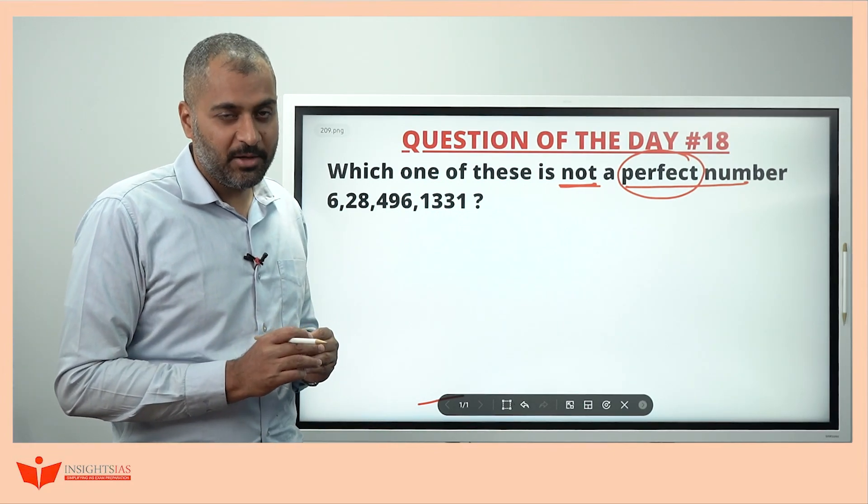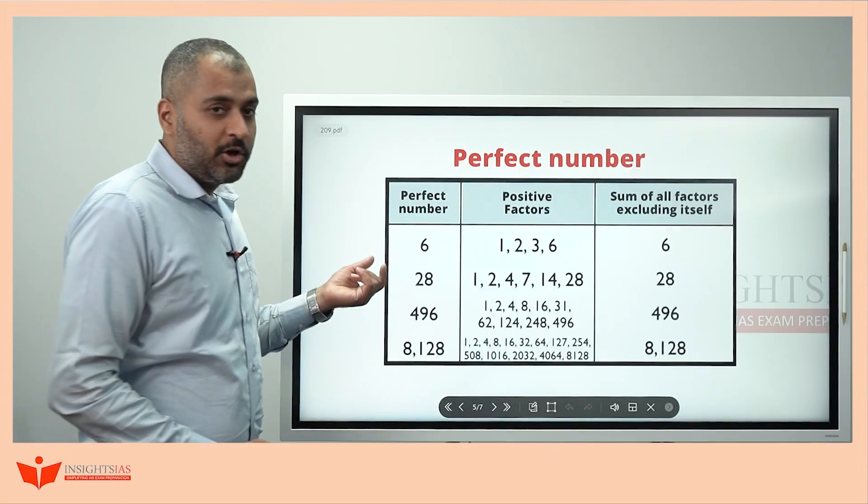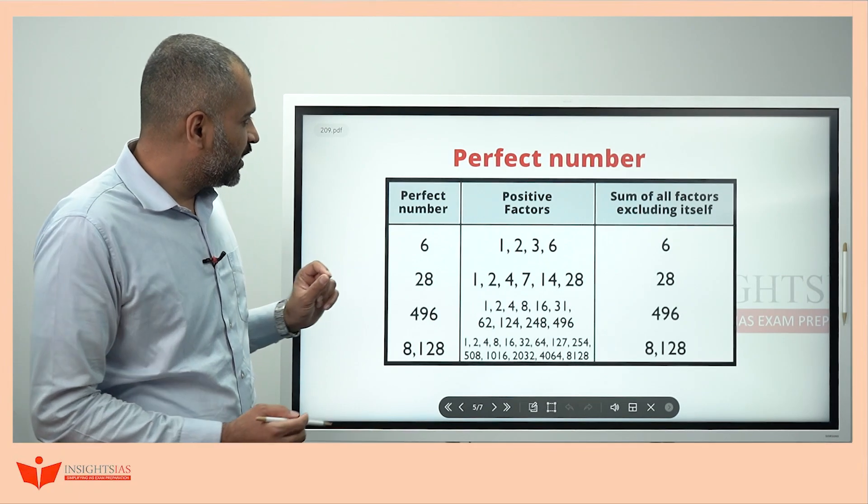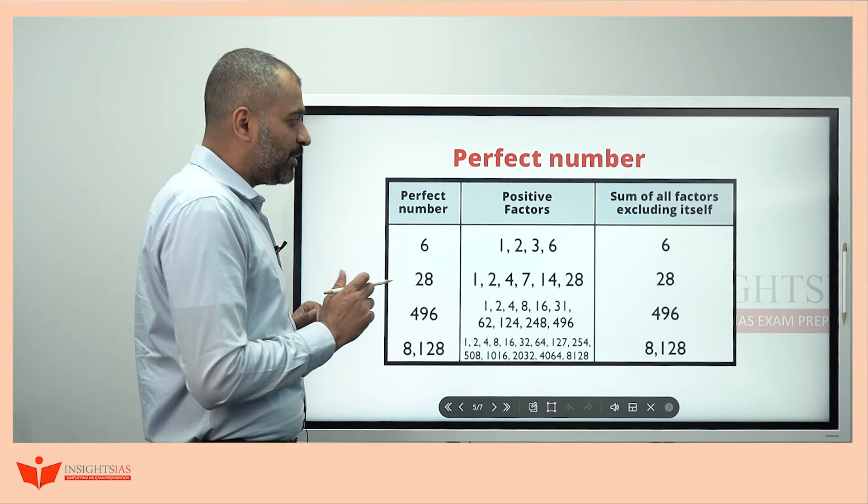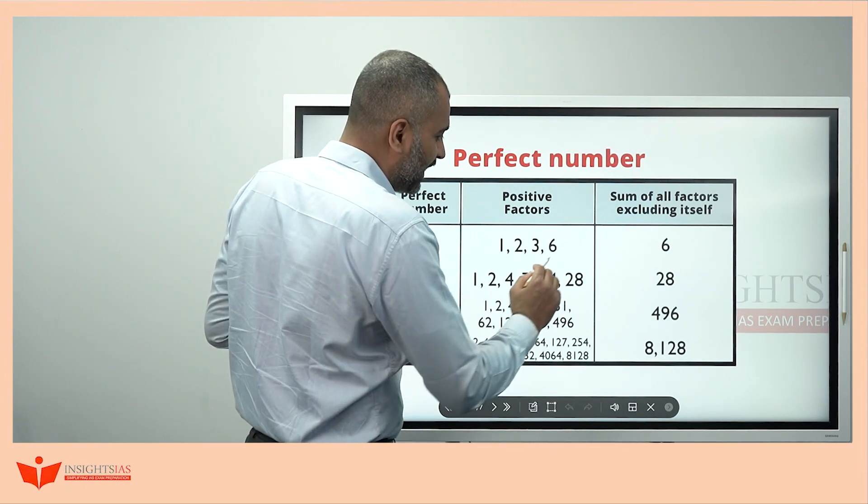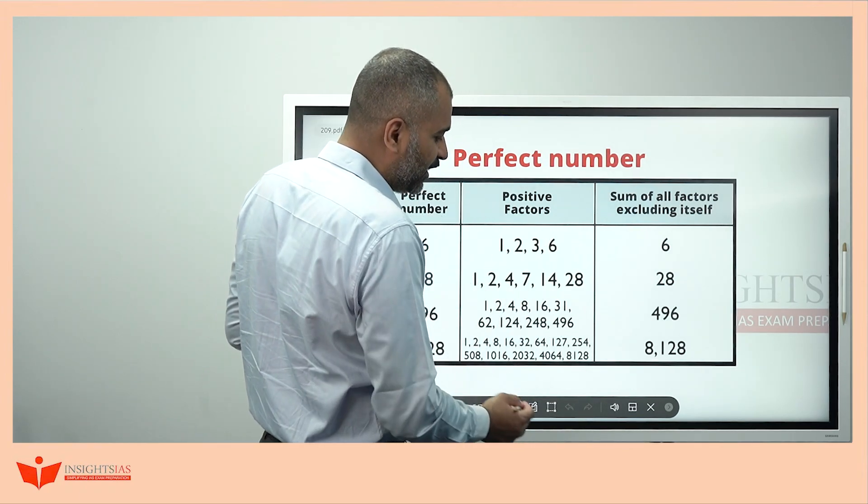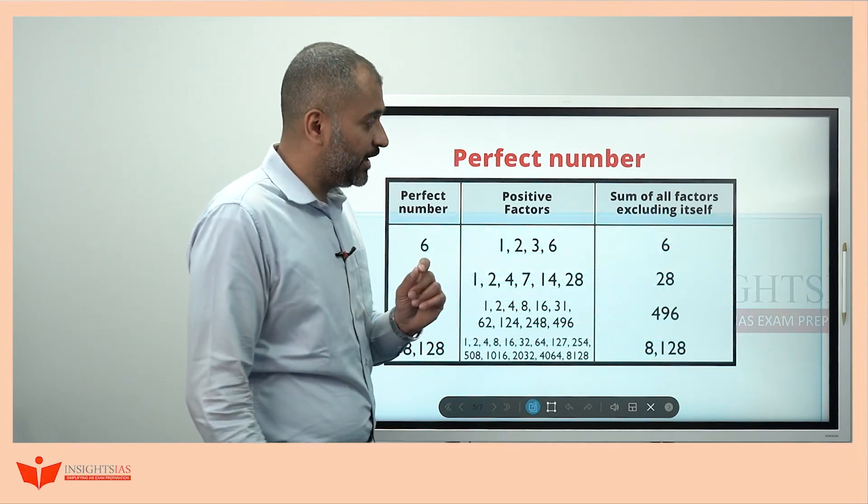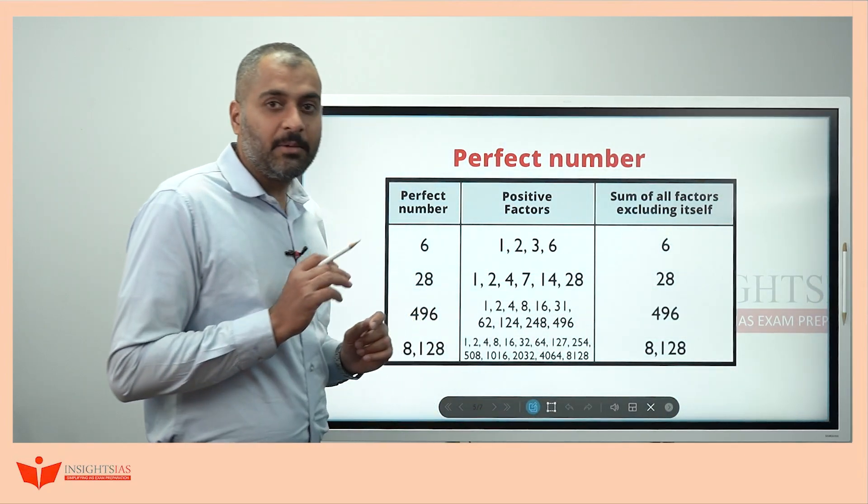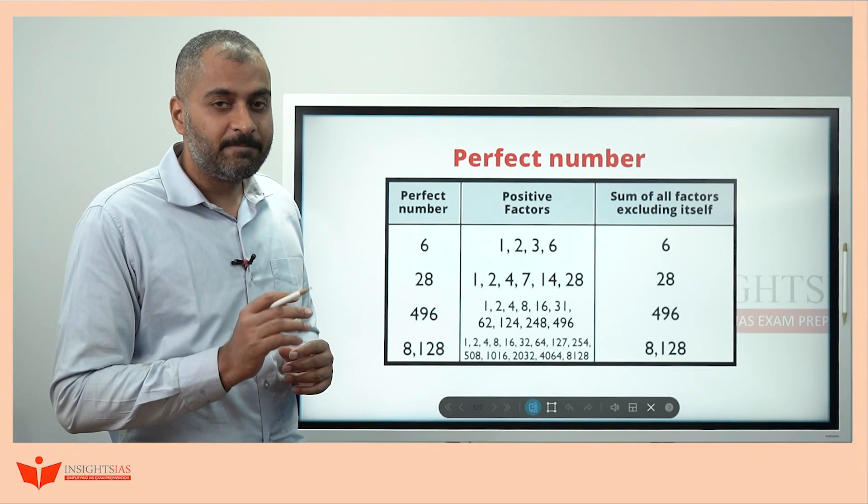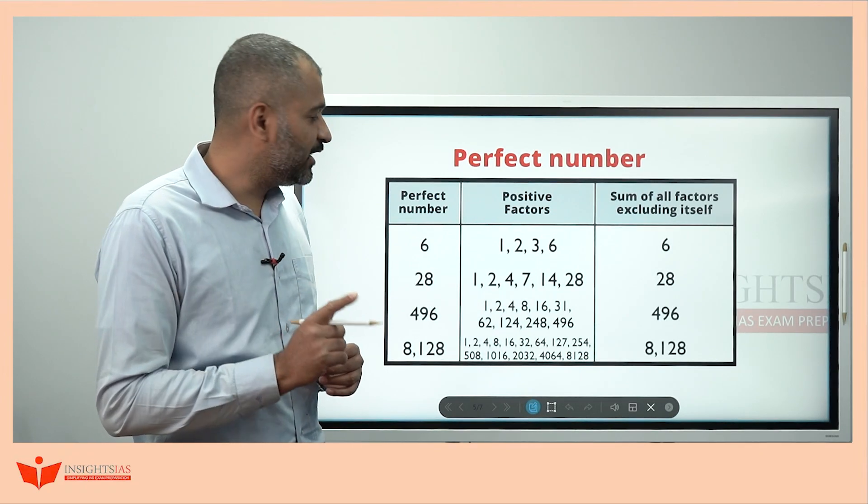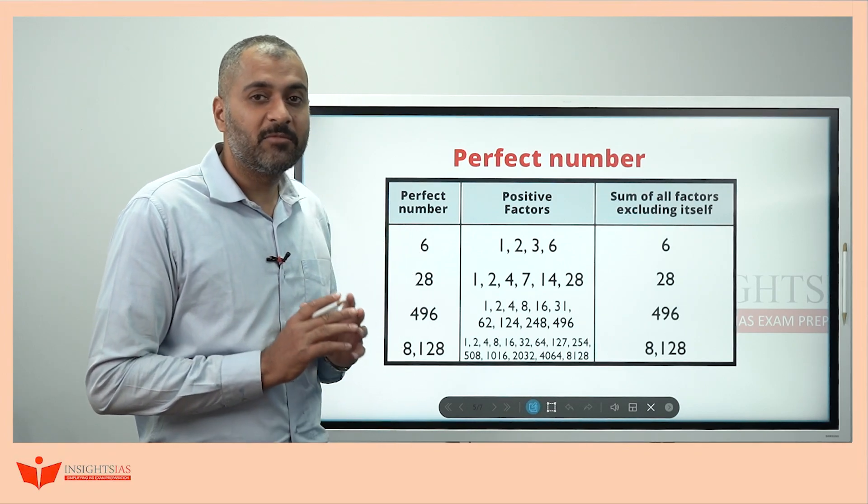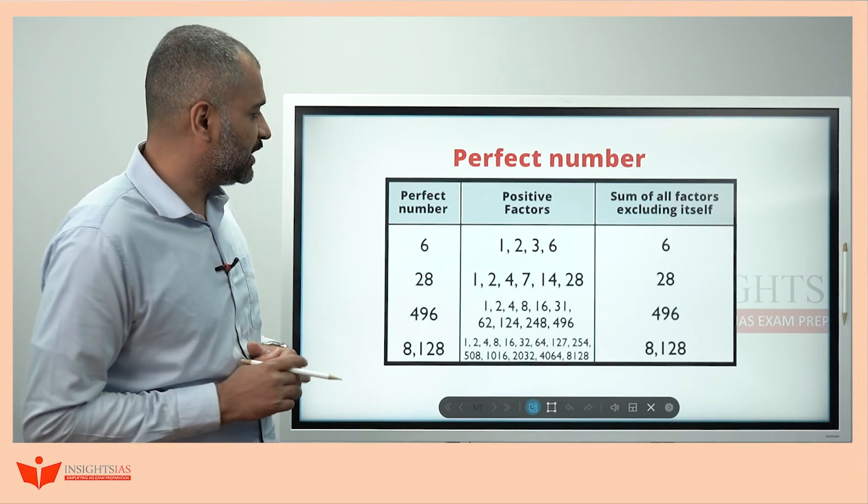I will explain what is perfect number before answering to this question. Look at this table. Perfect numbers are the numbers whose sum of the factors other than itself is equal to the number itself, then it is called perfect number. I will explain this one.